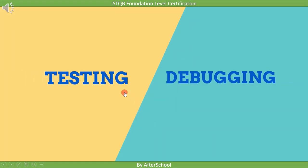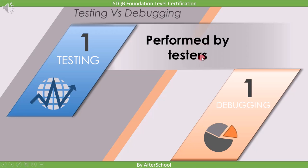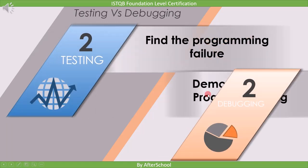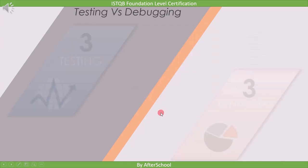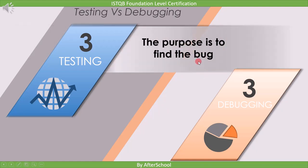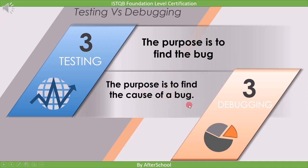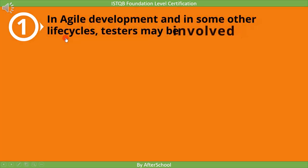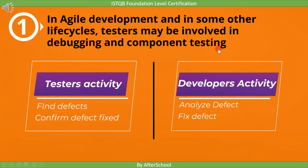Before we end this topic, let's look at the differences between testing and debugging. The first difference is that testing is performed by a tester and debugging is performed by a developer. The second difference is that testing finds the programming failure, whereas debugging demonstrates that the program is working fine. The last difference is that testing is done with the purpose of finding a bug, whereas debugging is done to find the cause of the bug. Testing activities are finding defects and confirming defects are fixed, whereas a developer's activity is to analyze defects and fix them.